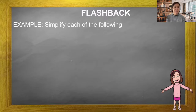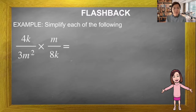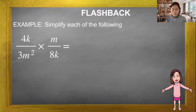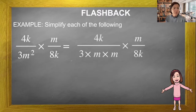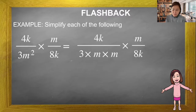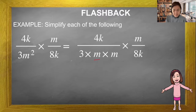How are we going to simplify the following algebraic expressions? Have a look — this is a multiplication: 4k over 3m² multiply by m over 8k. To make it easier, I separate the k and k, and I separate the 3m² into 3, m, and m — since m² is m times m.